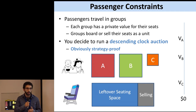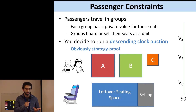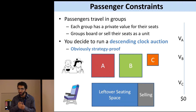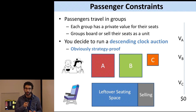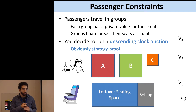Passengers are a bit tricky to sell to. They all travel in groups, and every group has some sort of a private value for their seats. Each group is either going to board the plane or sell their seats as a unit. Here I'm showing three different groups: A, B, and C. The bar on the right shows that group A has a higher value for its seats than B, and B higher than C. A and B are the same size, and they're a different size than C. In that leftover seating space, I wouldn't be able to accommodate A, B, and C altogether.